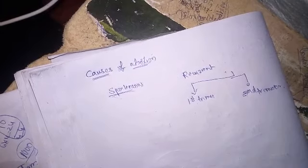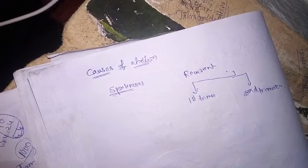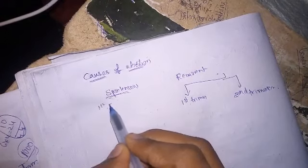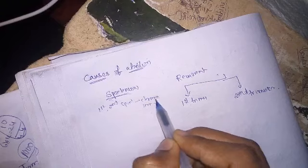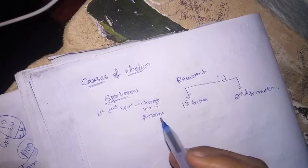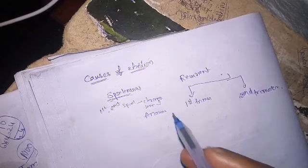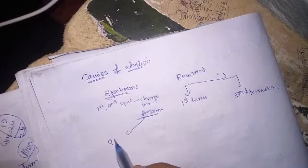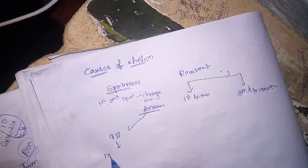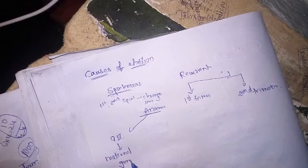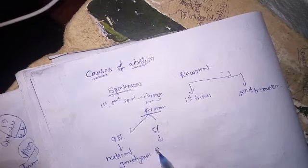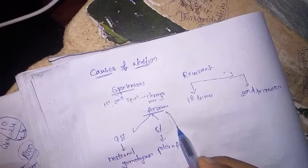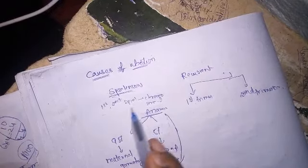The most common cause of first trimester and second trimester spontaneous abortion is chromosomal anomaly. 95% of these chromosomal anomalies are formed during maternal gametogenesis, and the remaining 5% are formed during paternal gametogenesis.